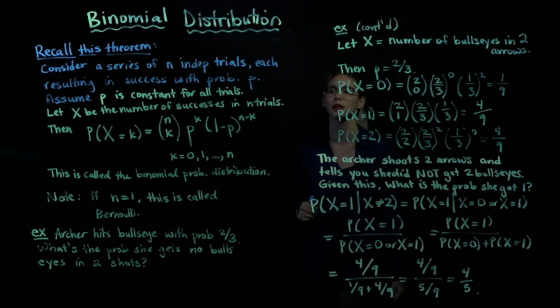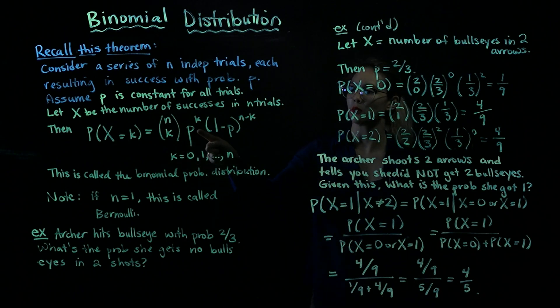So if we want to write our binomial distribution more formally, we can do it like this. Consider a series of n independent trials, each resulting in success with probability p. Assume p is constant for all trials. Let x be the number of successes in n trials. Then the probability that x is equal to k is equal to n choose k times p to the k times 1 minus p to the n minus k, and this is true for k equals 0, 1, up to n.